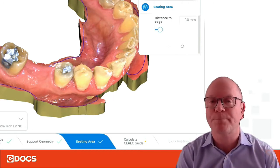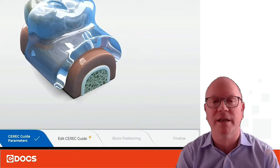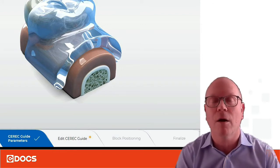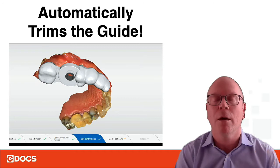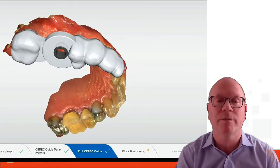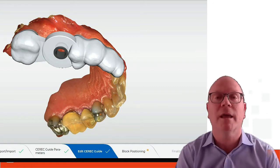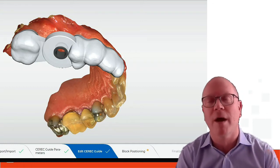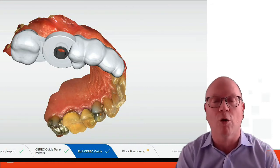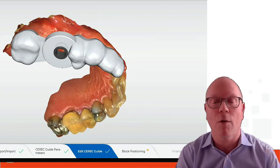Now when you first bring that in from the CMG DXD and you get through the guide positioning where you have to do the parameters, it automatically gives you an initial proposal and automatically trims the guide. As you see here, the guide comes automatically trimmed — you don't have to worry about how big it is compared to your block or where the over extensions are. You go right from there to block positioning, finalize, and then you can go ahead and mill it. So this is a great advancement.